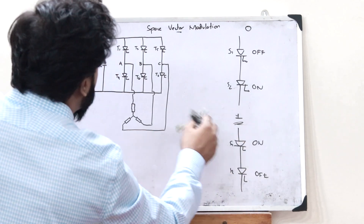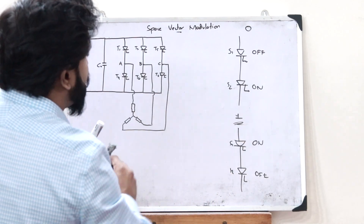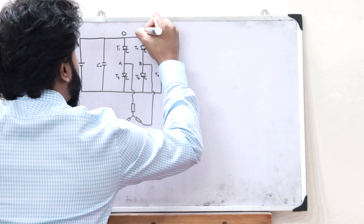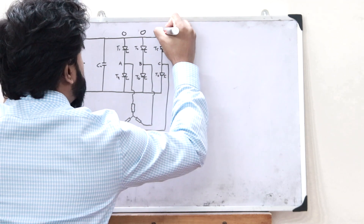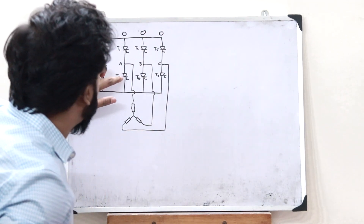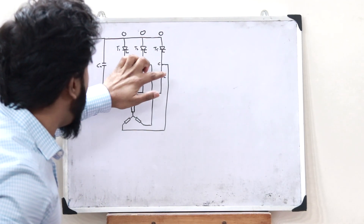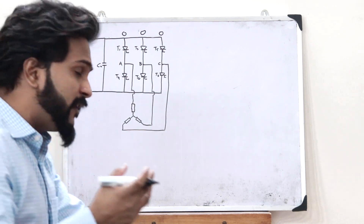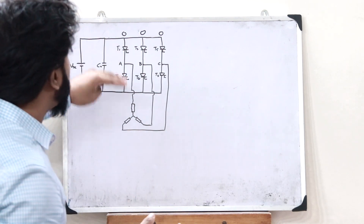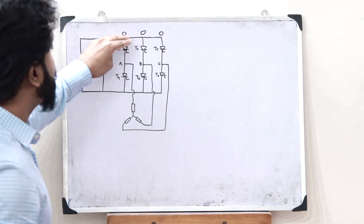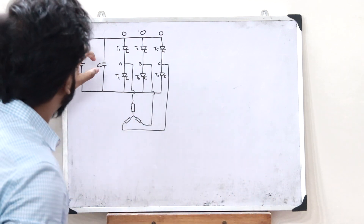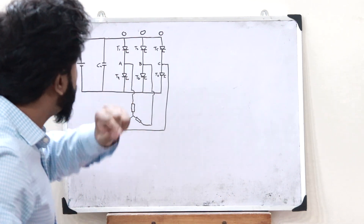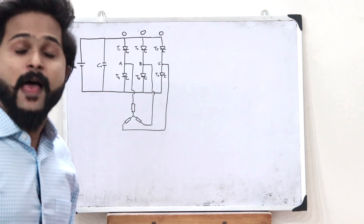Let us now apply these conditions onto a 3-phase inverter. Initially, all 3 phases will be in the 0 condition — that is, the downside switches will be ON. If just the downside switches are ON, the circuit cannot complete because the upside switches are not conducting. Therefore, this particular capacitor cannot discharge current onto these particular loads.